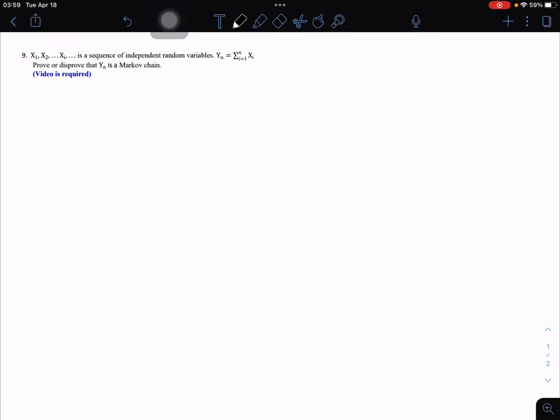Hi everyone. Let's continue to look at the question: x1, x2, ..., xi, ..., xn is a sequence of independent random variables. yn equals the sum of xi from i=1 to n. Prove or disprove that yn is a Markov chain.